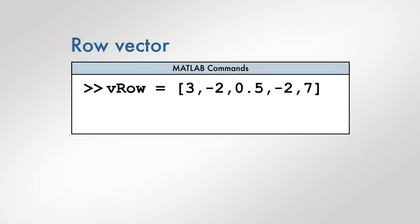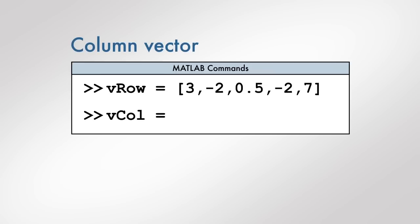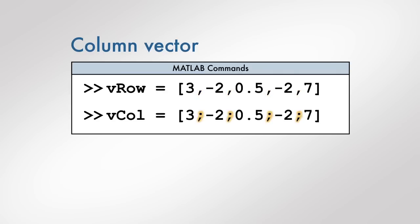How should we change the command to create a column vector instead of a row vector? This command will create the column vector shown and store it in a MATLAB variable. Notice that the only change was the replacement of commas by semicolons.